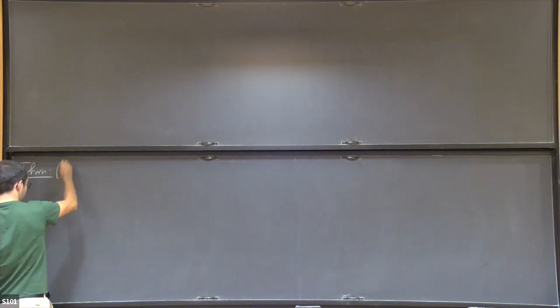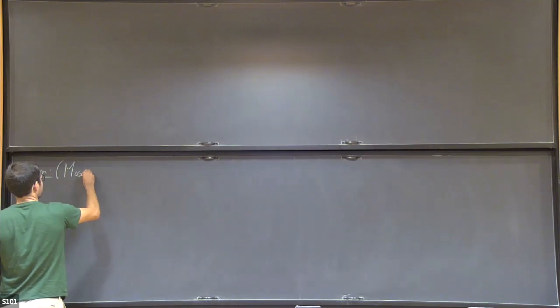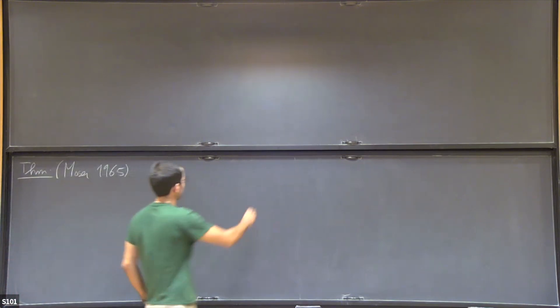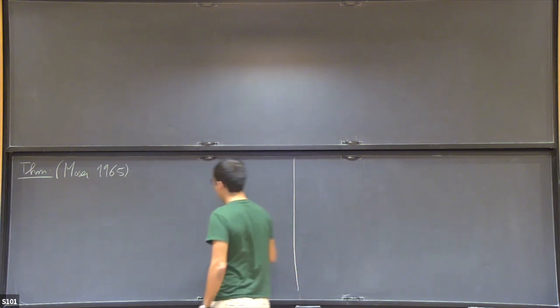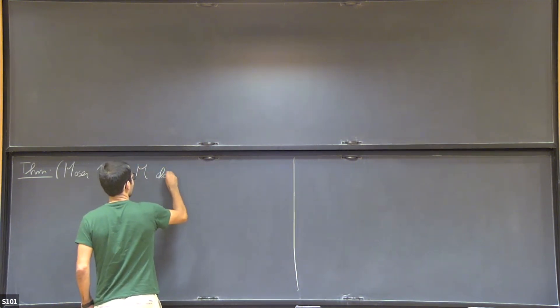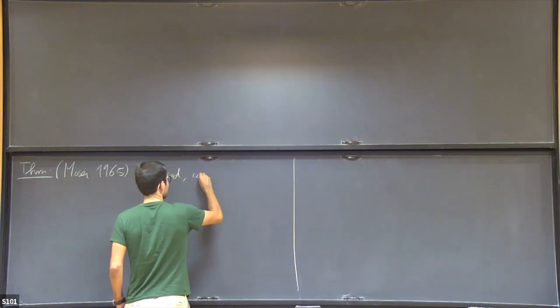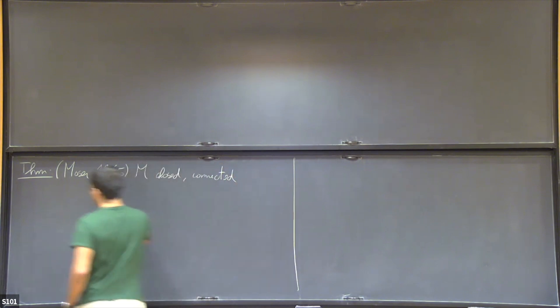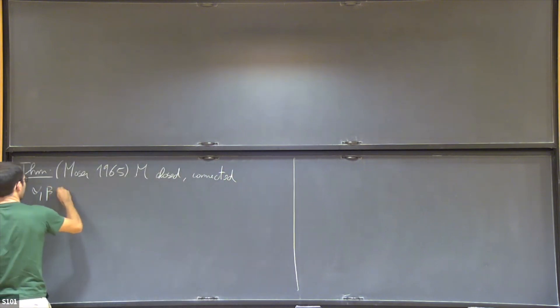This theorem is due to Moser in 1965. What Moser showed was the following: you take M to be a closed connected manifold and you take alpha and beta to be two volume forms on M.